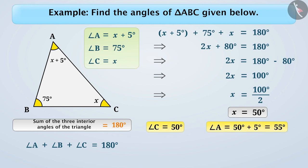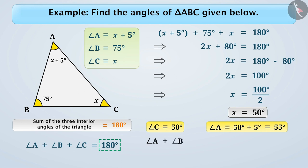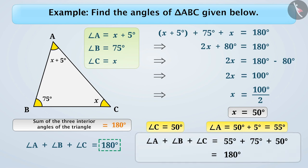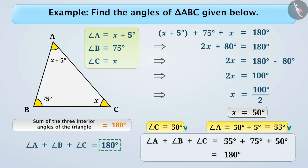If we want to verify the obtained answer, we will add all three angles and check whether the sum is equal to 180 degrees or not. Here, angle A plus angle B plus angle C is equal to 55 degrees plus 75 degrees plus 50 degrees, which is equal to 180 degrees. That means our answer is correct.